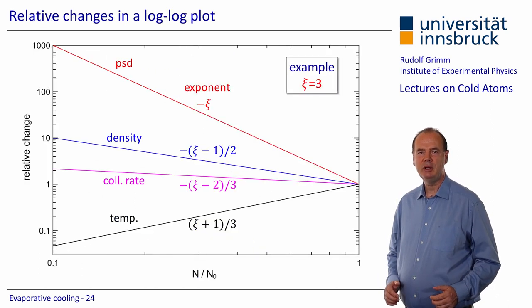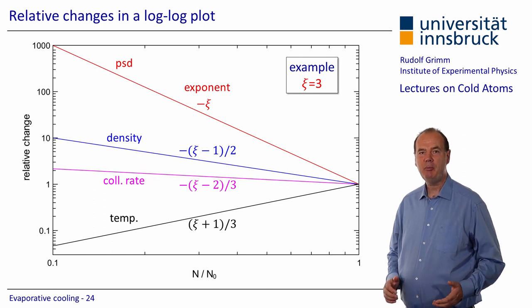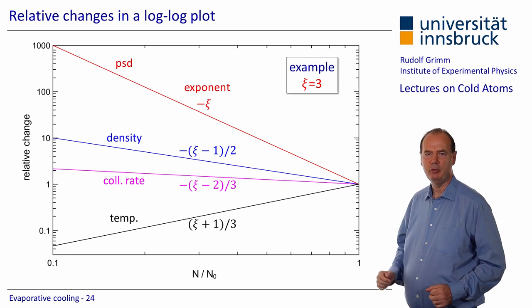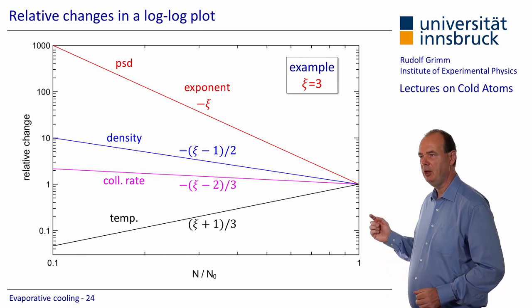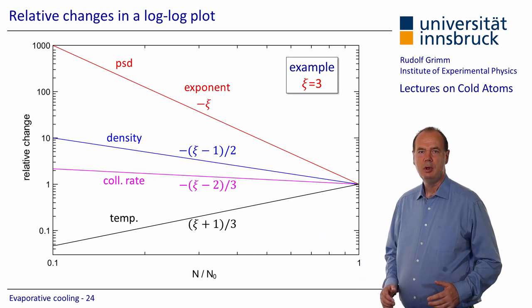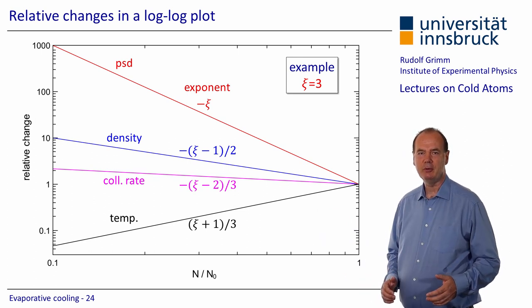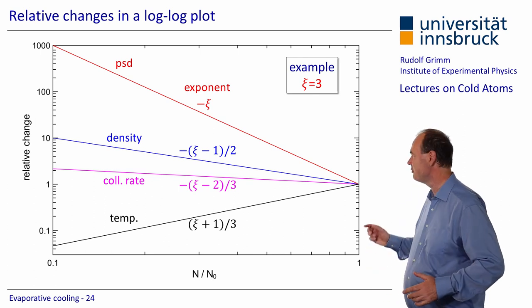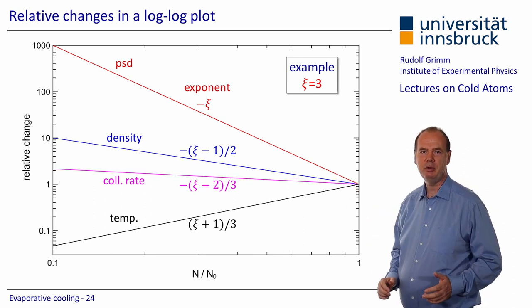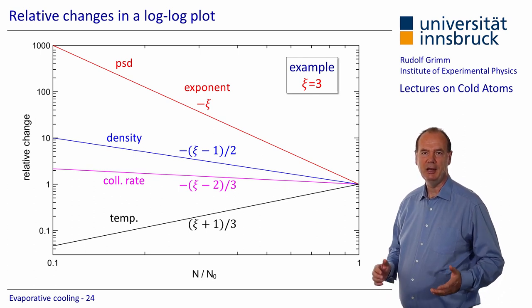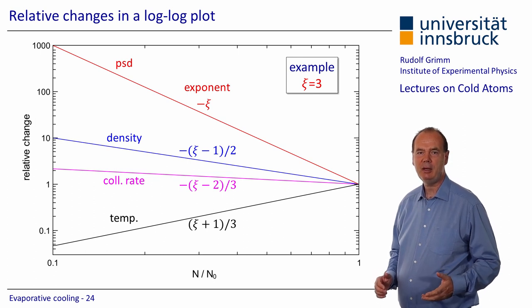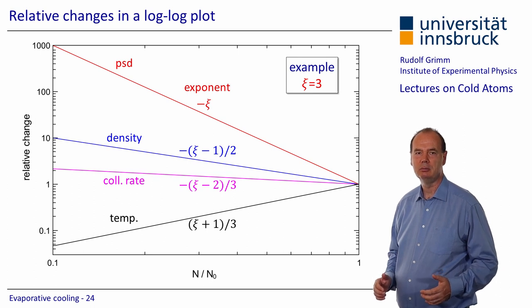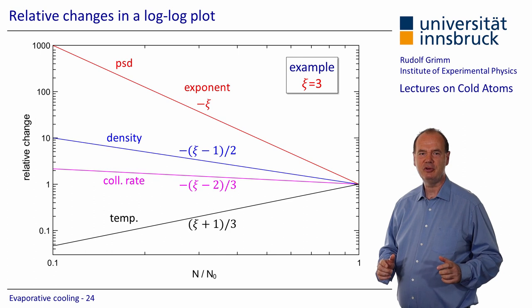This scaling of the relative quantities with the atom number N in the forced evaporation process can again be illustrated in a double-log plot. We show the behavior for an order of magnitude decrease of N. For our example of Xi equal 3, the phase space density goes up by 3 orders of magnitude, while the temperature goes down by 4/3 orders of magnitude. The number density goes up by 1 order of magnitude, and the collision rate increases by 1/3 order of magnitude. This is very efficient evaporative cooling — we really gain a lot by sacrificing just a factor of 10 in the atom number.